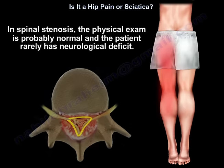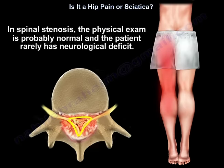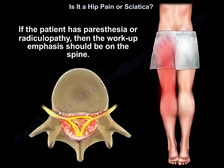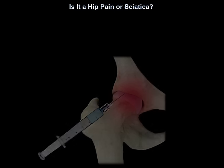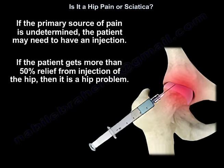In spinal stenosis, the physical exam is probably normal and the patient rarely has a neurological deficit. If the patient has paresthesia or radiculopathy, then the workup emphasis should be on the spine. In patients who have both conditions — lumbar stenosis and hip arthritis — injection of the hip joint may differentiate what is the primary source of pain. If the primary source of pain is undetermined, the patient may need an injection, and if the patient gets more than 50% relief from the injection of the hip, then it is a hip problem.